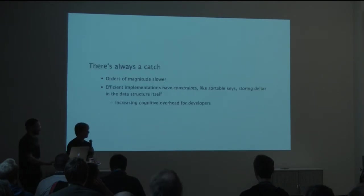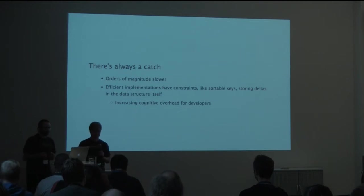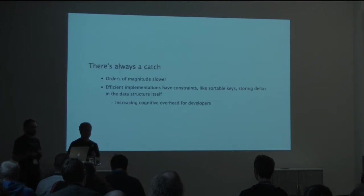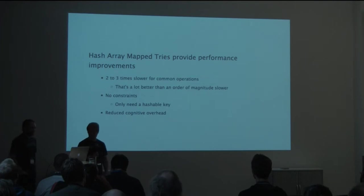Yes, but there's always a catch, right? And as Peter alluded to, there's the fact that typically these implementations have been orders of magnitude slower than their mutable counterparts. And that efficient implementations often come with constraints, such as requiring sortable keys and storing the deltas in the data structure itself. So sortable keys of course sets requirements for the programmer to have to think of whether this data structure is appropriate for a given problem. And storing the deltas in the data structure increases memory overhead because you actually have to store that data along with the actual data that you're interested in. So today we're going to talk about hash array mapped tries or trees. And we tend to pronounce them tries. So, Peter, can you tell us a little bit about those?